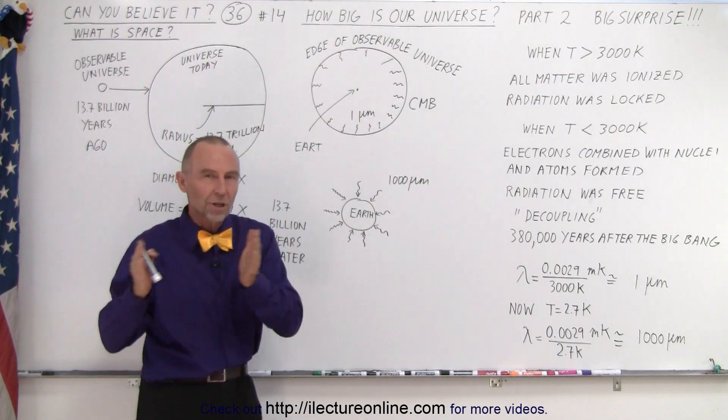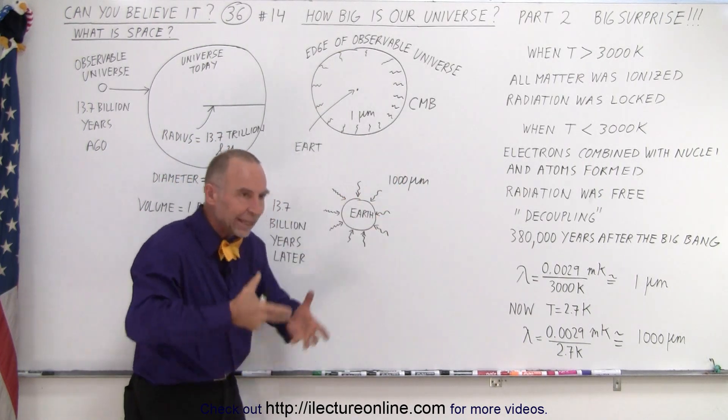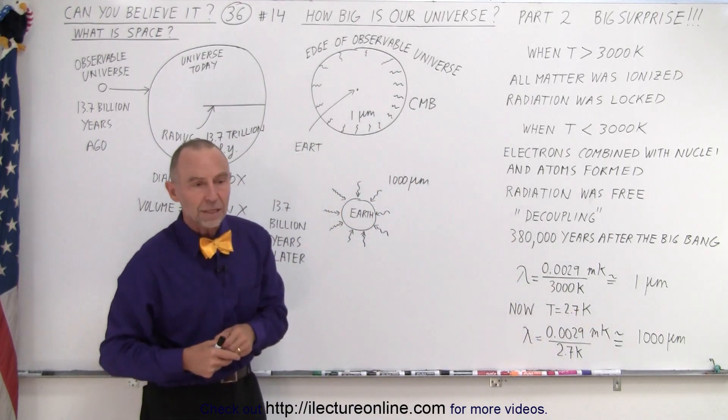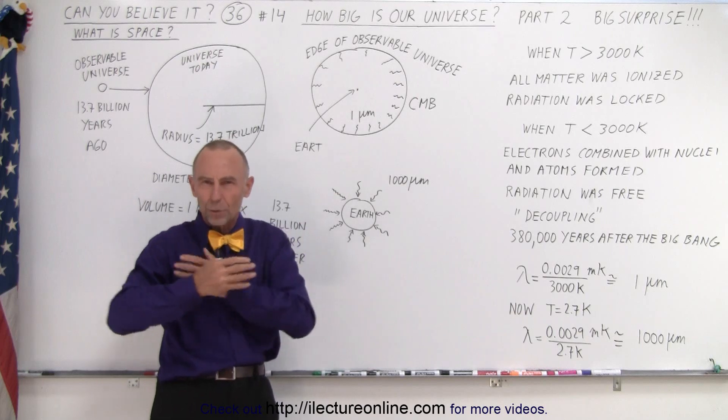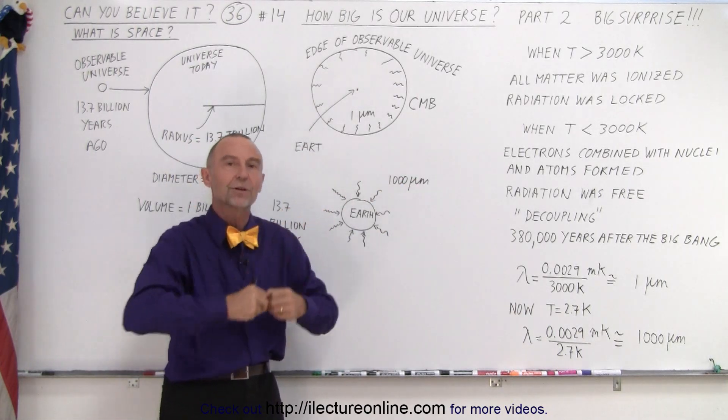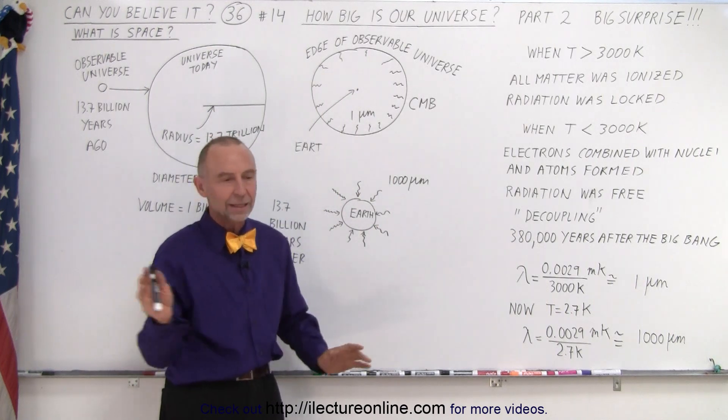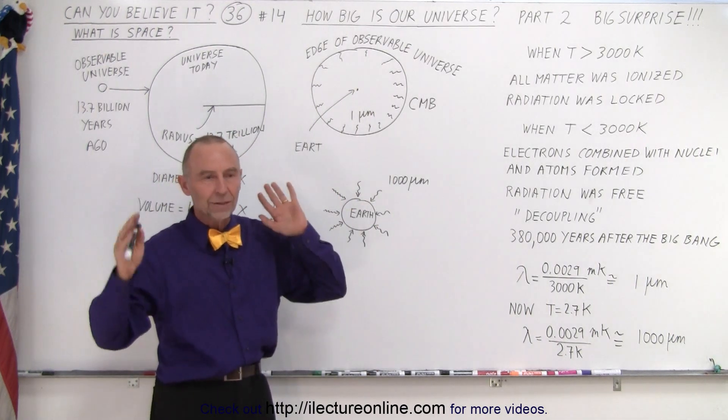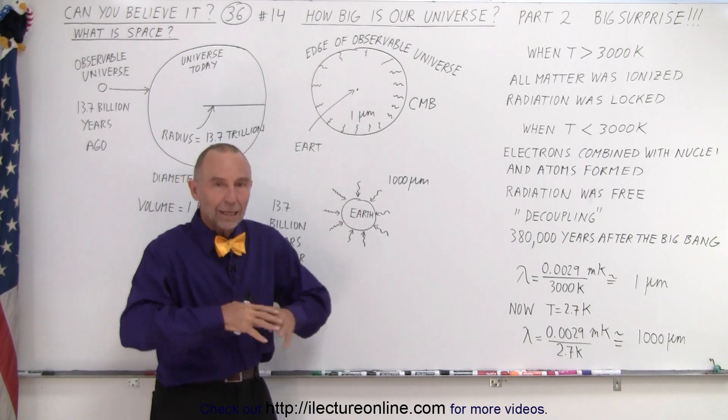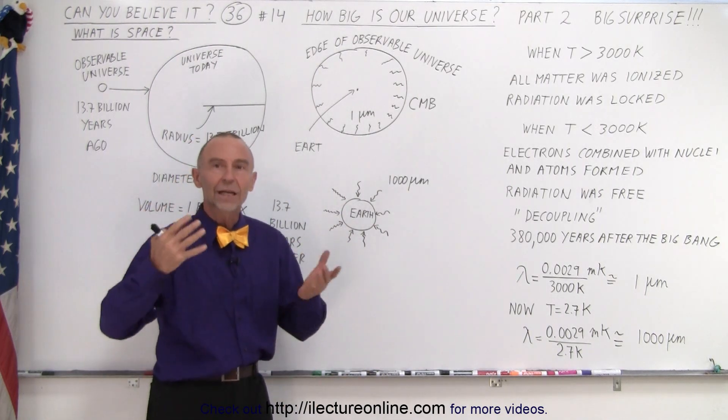And no matter which direction they pointed their telescope in, they kept on getting this radiation, this radiation of a thousand micrometers. And it was noise. They wanted to get rid of it because they wanted to see what was out there. And of course, this was interfering with their experiment. And they tried for the longest time to get rid of it. They cleaned it. They thought it was all kinds of things wrong. They recalibrated. They did everything they could to get rid of this bothersome interference.